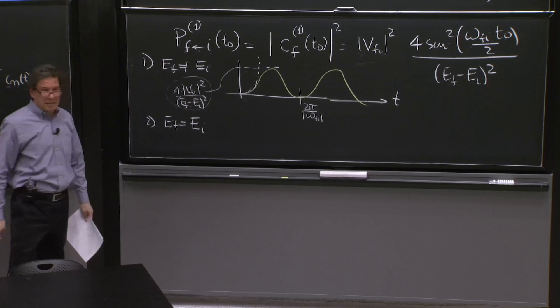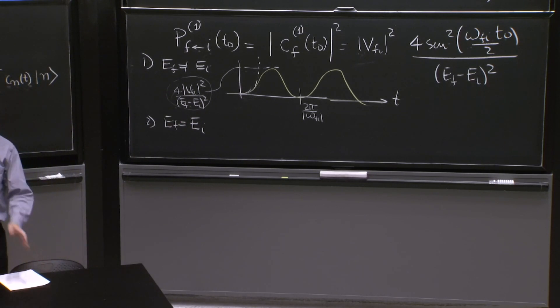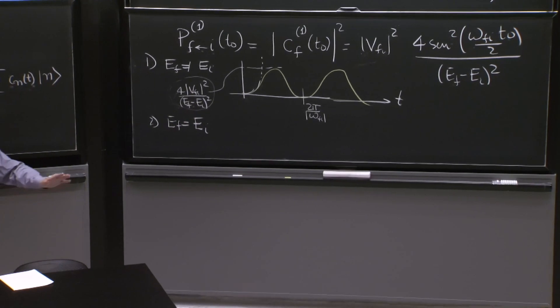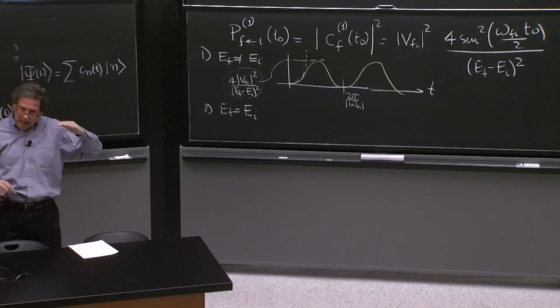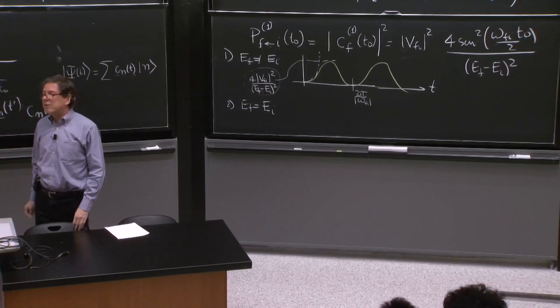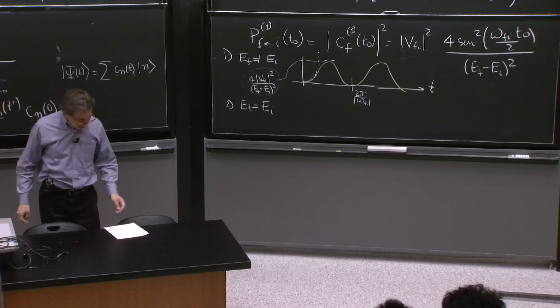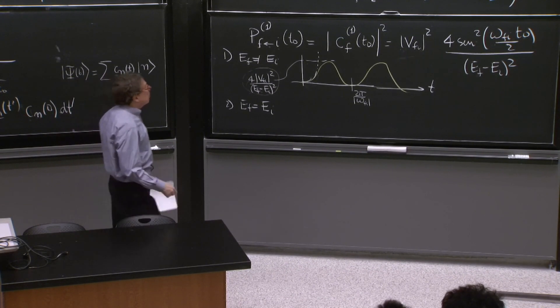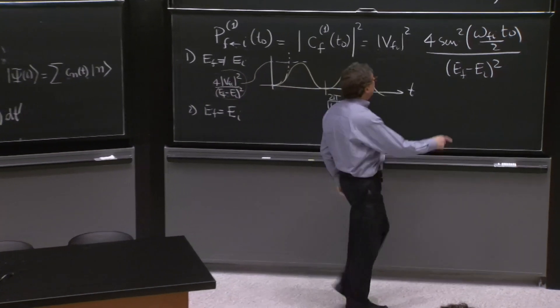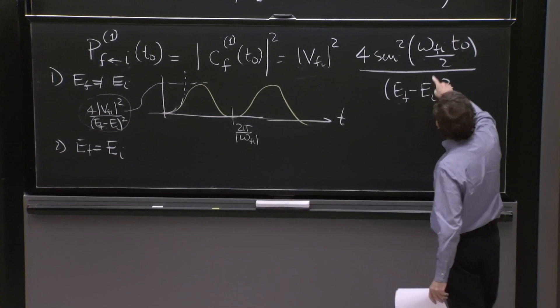The other case that is of interest is the case when EF is equal to EI. I'm not saying that the state F is the same as the state I. Not at all. It's a different state, but happens to have the same energy. And in that case, we must take the limit as EF goes to EI.